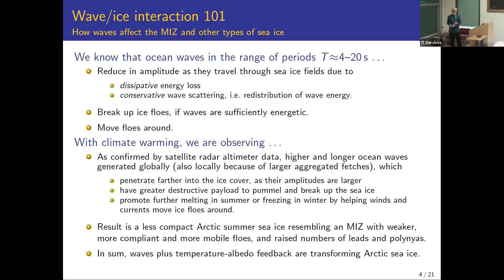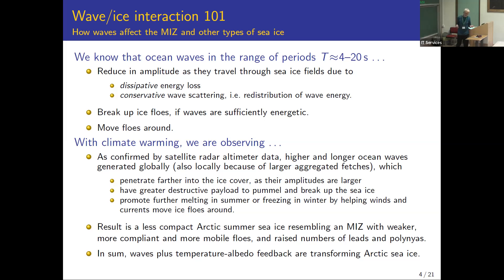In summer, waves are going to come in and break up the ice, creating leads which cause lateral melting in the surrounding ice. In winter, those leads are going to freeze over, so we have a different situation in summer and winter. In summer we're going to have less compact marginal ice zone-type ice in the Arctic, and we're already seeing evidence of that.